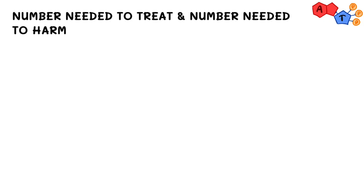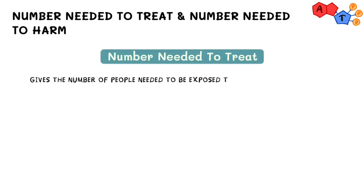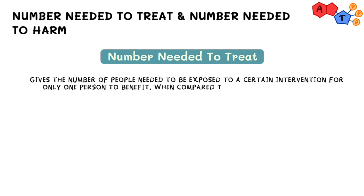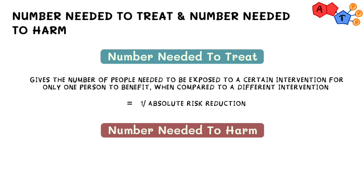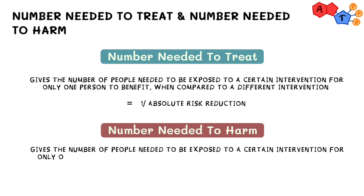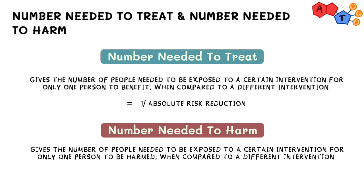Since attributable risk and absolute risk reduction are opposites, when we talk about number needed to treat and number needed to harm, it should make sense why they are also opposites. Number needed to treat shows us how many people we need exposed to a certain intervention for only one person to benefit compared to a different intervention. Since we're talking about benefit, we use absolute risk reduction in the formula, which is simply 1 over absolute risk reduction. Number needed to harm shows us how many people we need exposed to a certain intervention for one person to be harmed, so we use attributable risk in the formula, which is simply 1 over attributable risk.